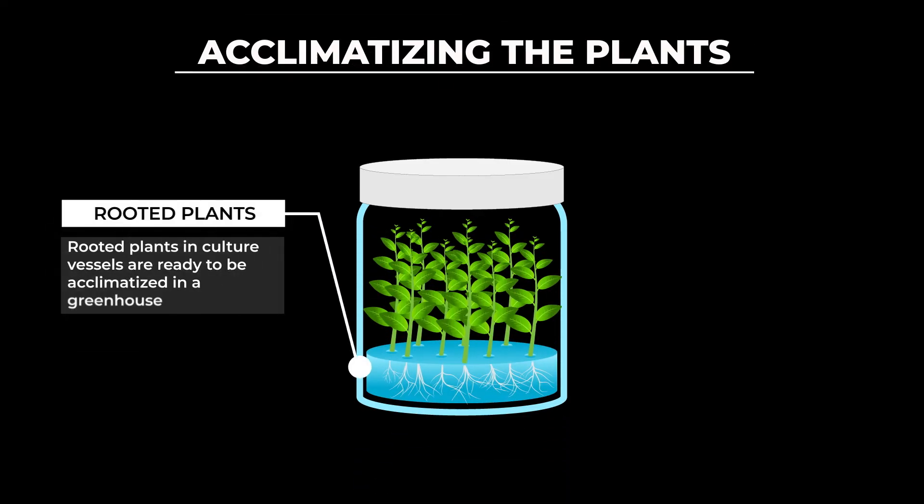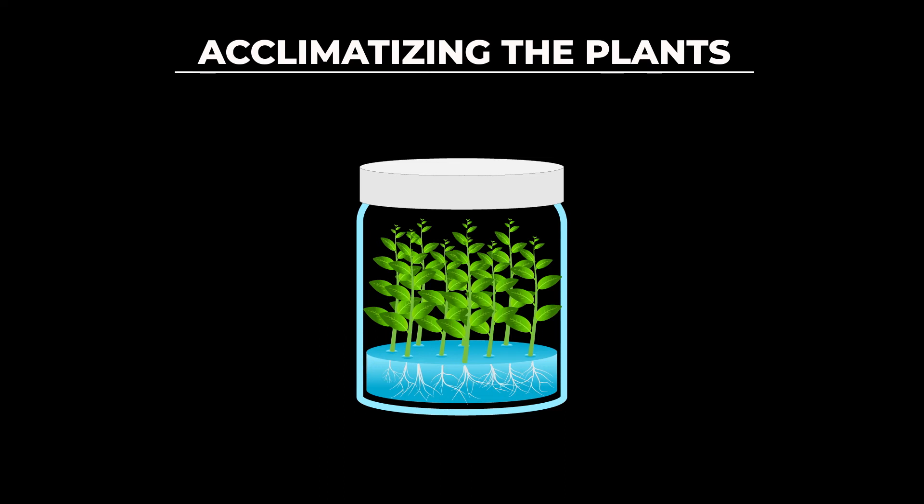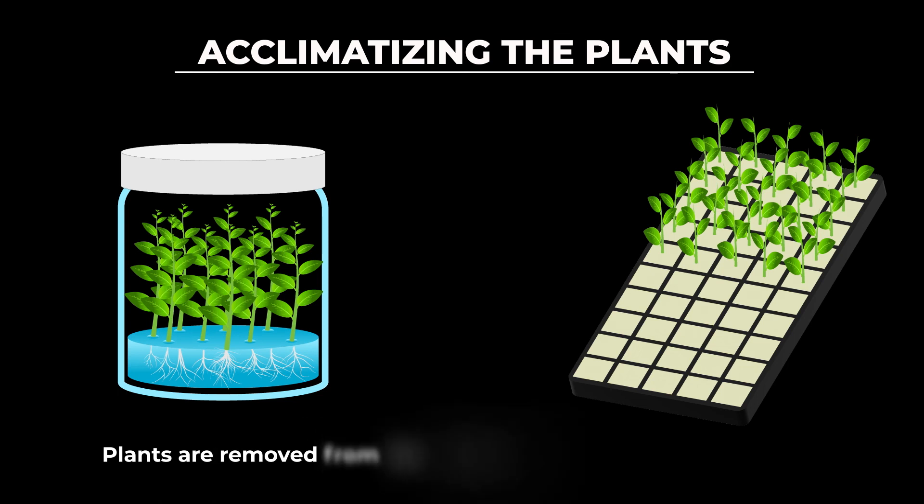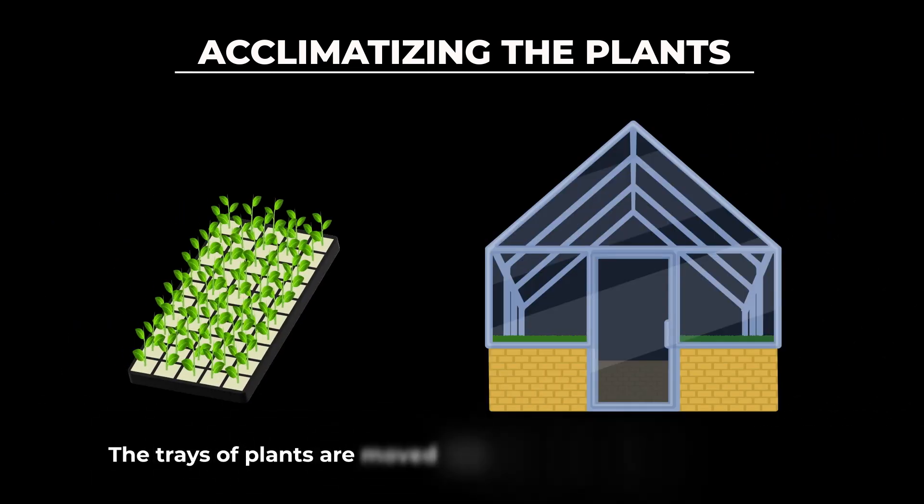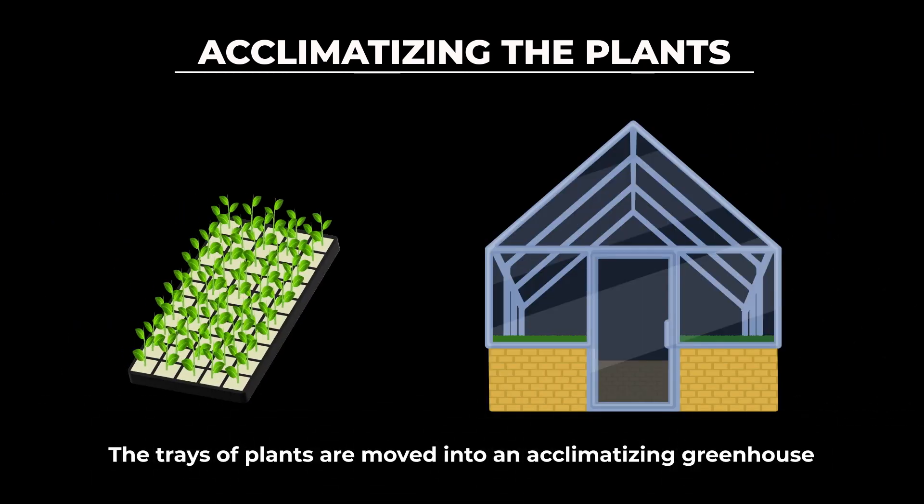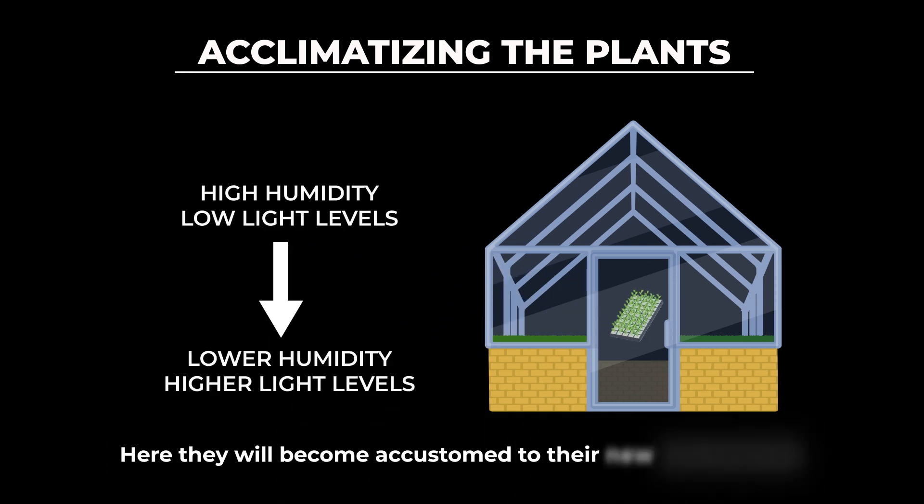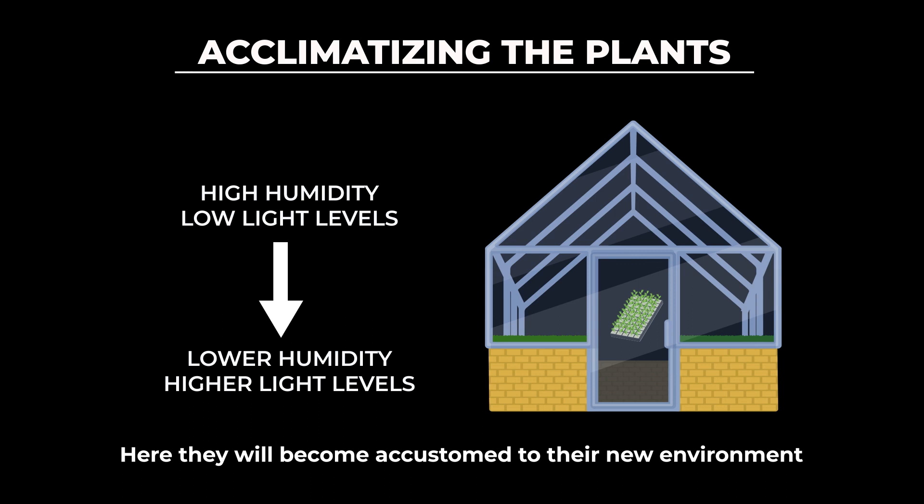The first part of acclimatizing or adapting the plants to their new environment is to carefully take them out of their culture vessels and plant them into propagation trays so they can continue to grow and root into the new medium. Then the trays are put into a greenhouse so they can adapt to their new environment of lower humidity and higher light levels compared to life in a culture vessel.